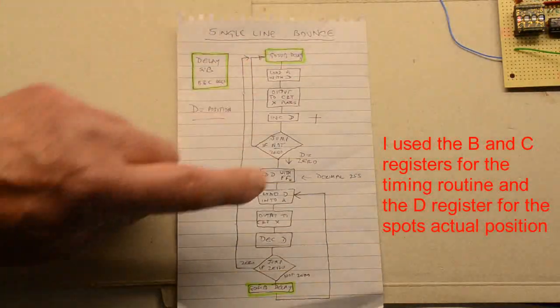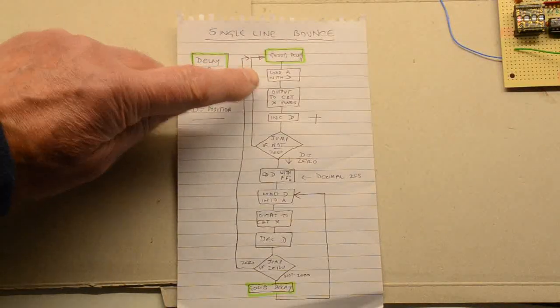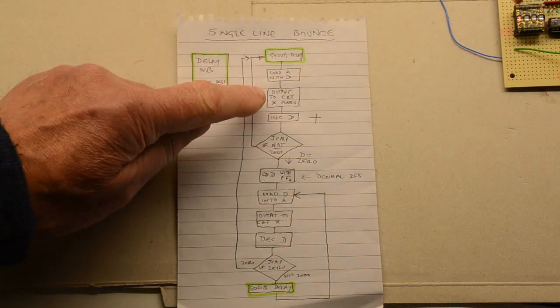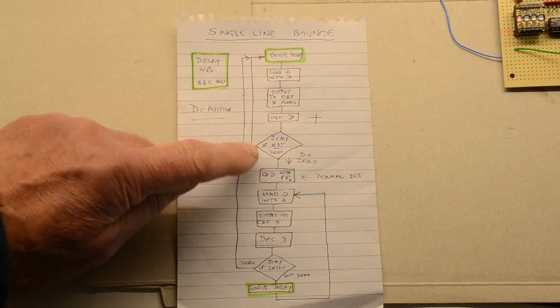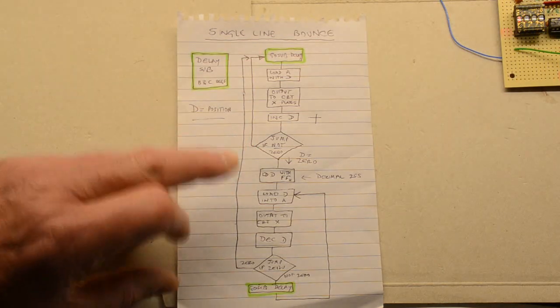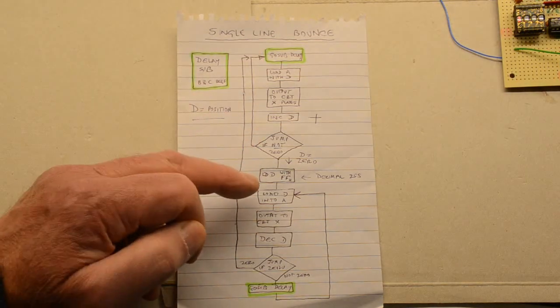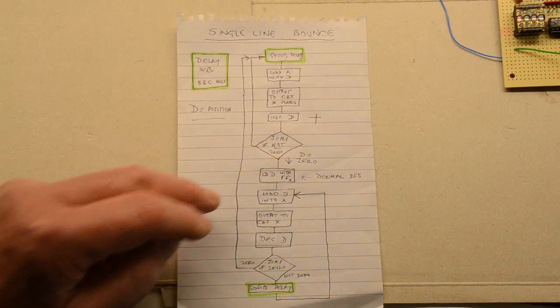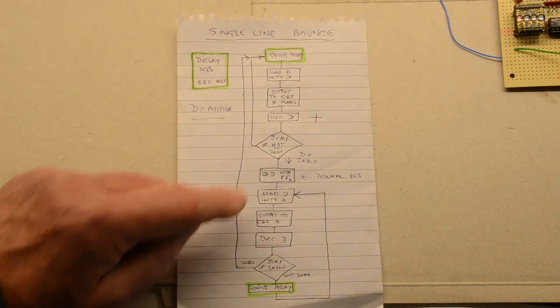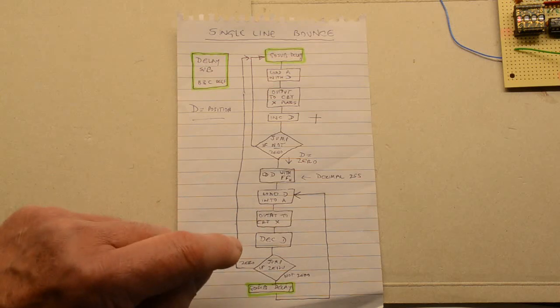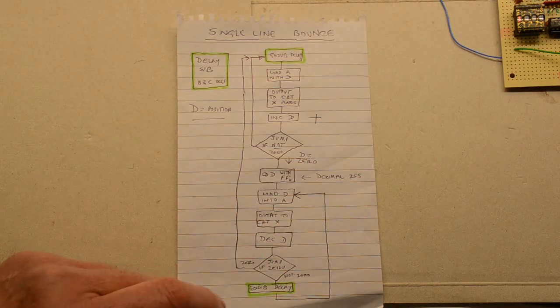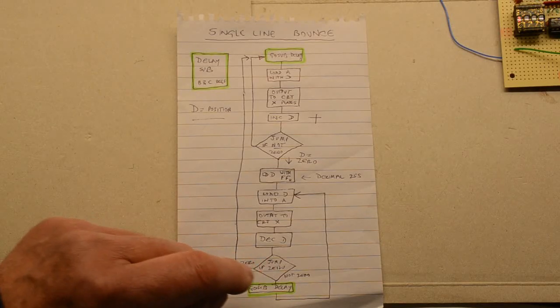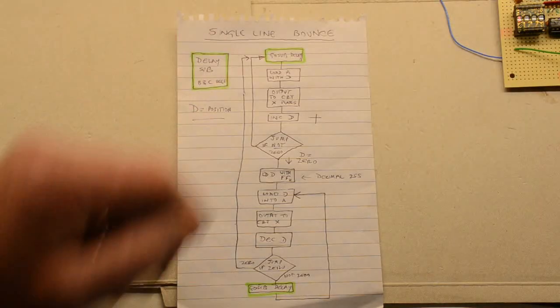And all this is here is just load with a value in D, so use the D register just for the pulse going backwards and forwards, output it to the X plates, increment D, jump if not zero, go back to the delay and so on. And if it is zero, then we know we've reached the far right hand side, so that's obviously jumped down to zero. So we want to put FF again to take it to the far right hand side. Load from the D into the A, output it again, decrement D, jump if zero. And if it's zero we've obviously reached the bottom, sorry, the far left, and we'll jump back and we'll start all over again.